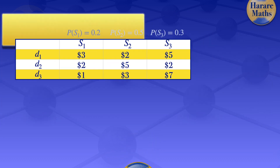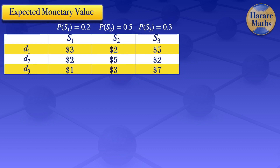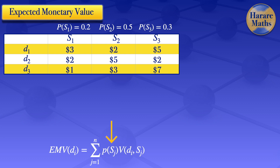I will start with part number 1 using the expected monetary value. The formula for expected monetary value for decision Di is the summation from j equals 1 up to N of P(Sj) times V(Di, Sj), where P(Sj) is the probability of state of nature Sj, and V(Di, Sj) is the payoff under decision i under state of nature Sj.